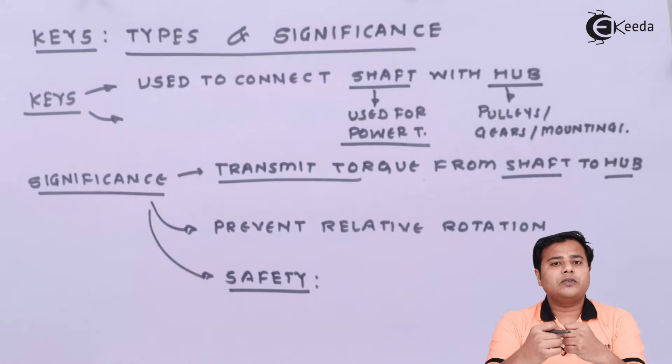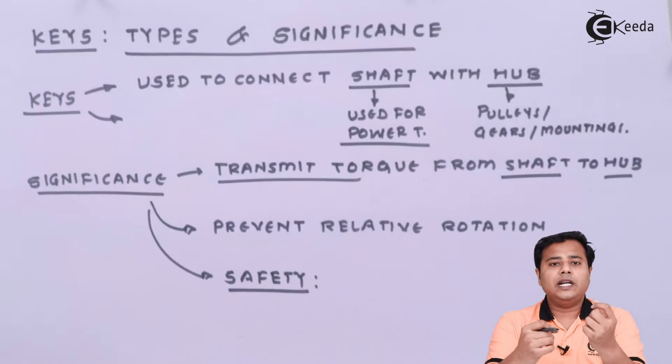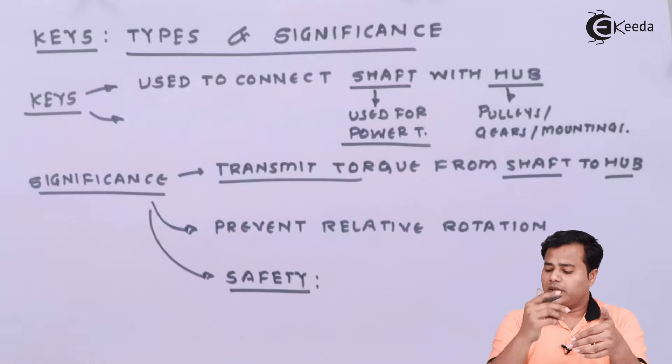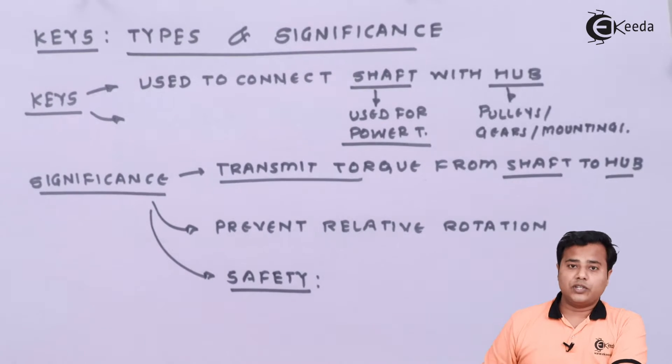To prevent that loss of power, we generally use key so that it will firmly hold both of them together and they will rotate together. That is why for the prevention of relative rotation we use it.